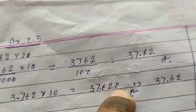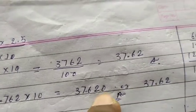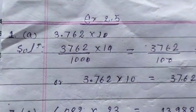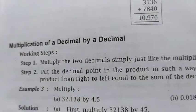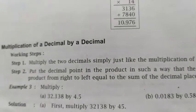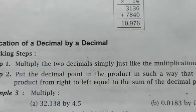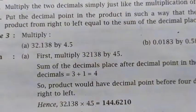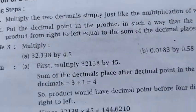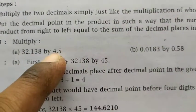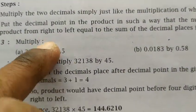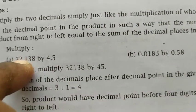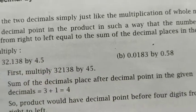Remember that a zero after a decimal has no value, so you can remove trailing zeros. Now the second topic is multiplication of a decimal by a decimal — both decimals multiplied together. For this, just multiply them as whole numbers — forget about the decimal point for a moment and multiply as you would normally.